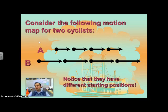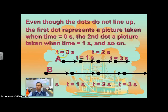Now we can also show a motion map with two objects at once, and we label each object separately. So we have object A and object B. Notice they have different starting positions. Object A is starting in front of object B. Now just because they have a different starting position, these first dots are still taken at the same time. So this dot is time 0, and this dot is time 0. These two are time 1, time 2, and the third second right there.